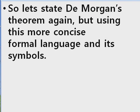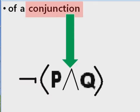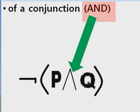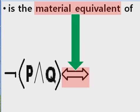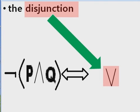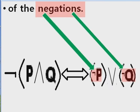So let's state DeMorgan's theorem again, but using this more concise formal language and its symbols. The negation NOT of a conjunction AND is the material equivalent of the disjunction OR of the negations.